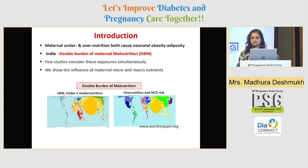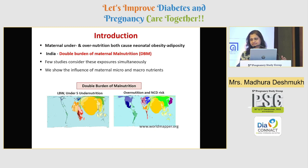As we all know, maternal under- and over-nutrition both cause neonatal adiposity and obesity. But India has a unique position of double burden of maternal malnutrition — the coexistence of under-nutrition in the form of micronutrient deficiencies and over-nutrition in the form of macronutrient excess or obesity. But very few studies consider these exposures simultaneously. Here we show the influence of maternal micro and macronutrient status on neonatal body size and composition in GDM and NGT pregnancies.